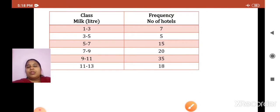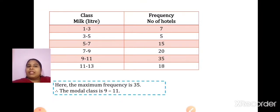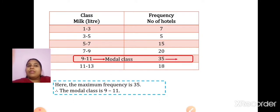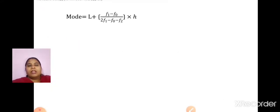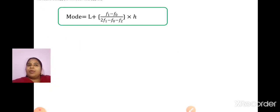So, all values for the formula are given. Let us highlight everything in the table. The maximum frequency is 35, so the modal class is 9 to 11. Frequency of the modal class, F1, is 35. Above it will be F0, that is 20. Below it will be F2, that is 18. H is 2. The formula is: Mode is equal to L plus F1 minus F0 upon 2F1 minus F0 minus F2 into H. By now, I hope you have learned the formula.